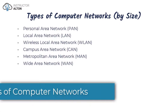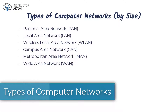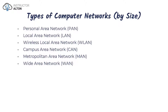In today's video we're going to talk about the types of computer networks from the perspective of their size, starting with the smallest type which is the personal area network and ending with the largest type which is the wide area network. It's very common for people to use acronyms — for a local area network you'll hear LAN, and for a wide area network you'll hear WAN.